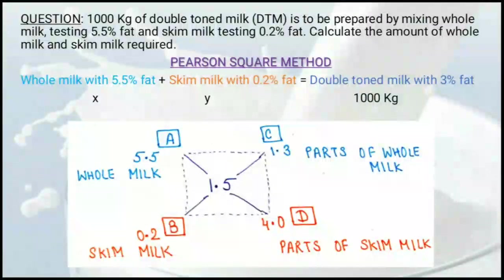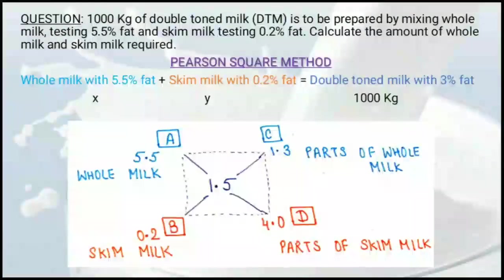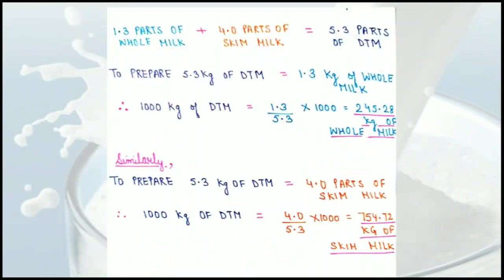Corner A is for whole milk, so corner C is also for whole milk. Corner B is for skim milk, so corner D is also for skim milk. We know 1.3 parts of whole milk require 4.0 parts of skim milk. Adding these: 1.3 + 4.0 = 5.3 parts of double toned milk total.